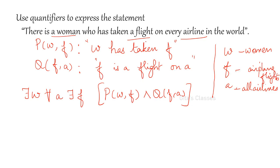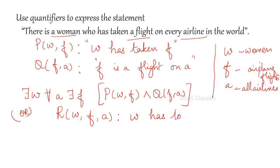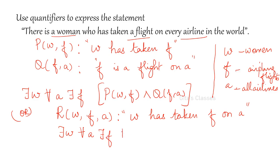Or you can make it simpler by defining all three in one predicate. Let R(w, f, a): w has taken f on a. Then: there exists w, for all a, there exists f such that R(w, f, a). Three variables is actually simpler. Anyone you can do.